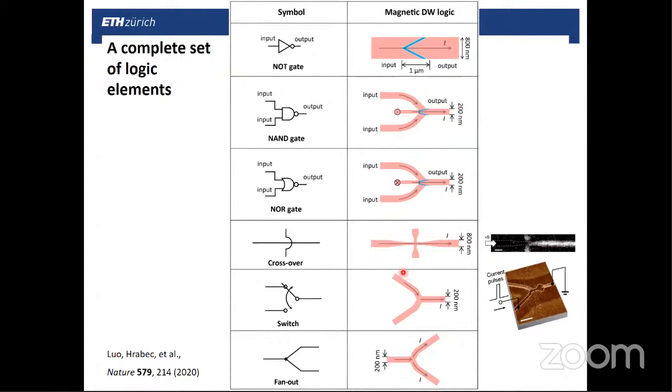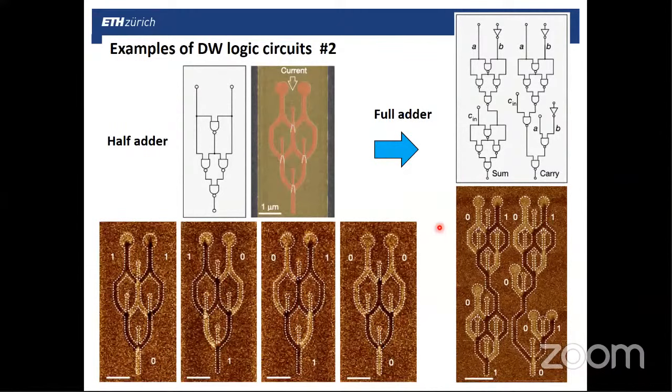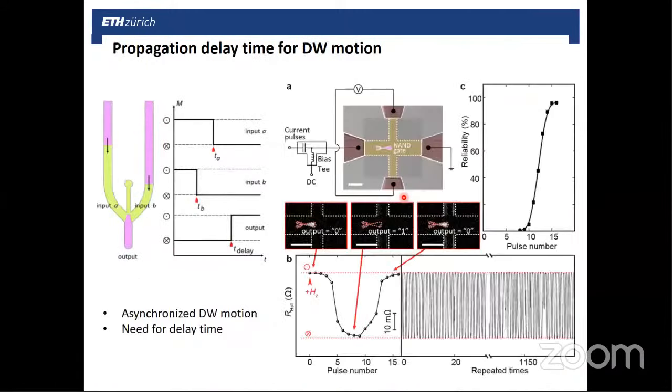This allows to build more complex logic circuits. Here you see a few examples that are made by combining different AND, NOT gates, different numbers. This can all be operated by currents and provide output. So here you see other examples of these linear logic structures. Okay, skip that for the moment. But before concluding, I would like to just mention some of the issues that still remain to be addressed.